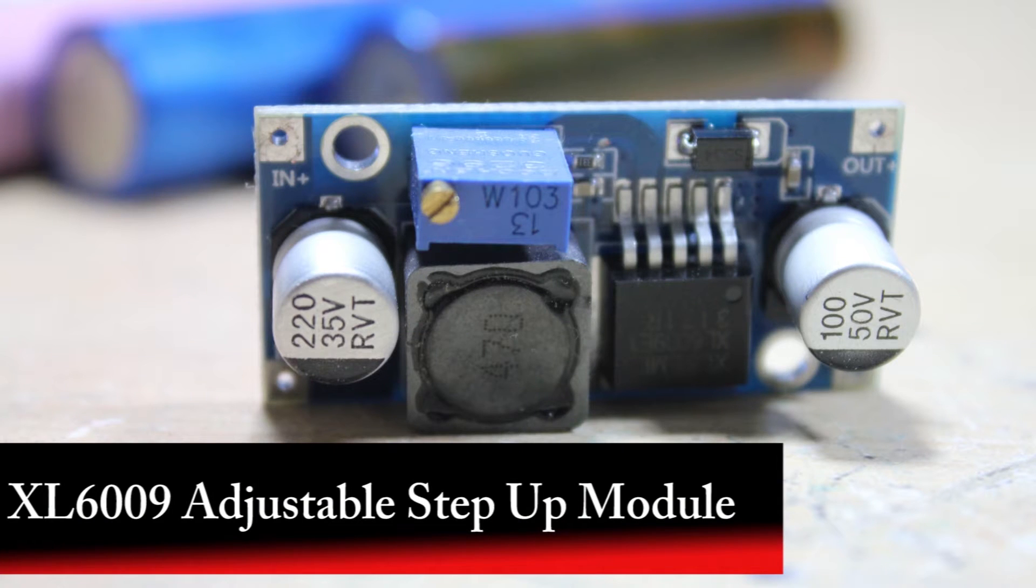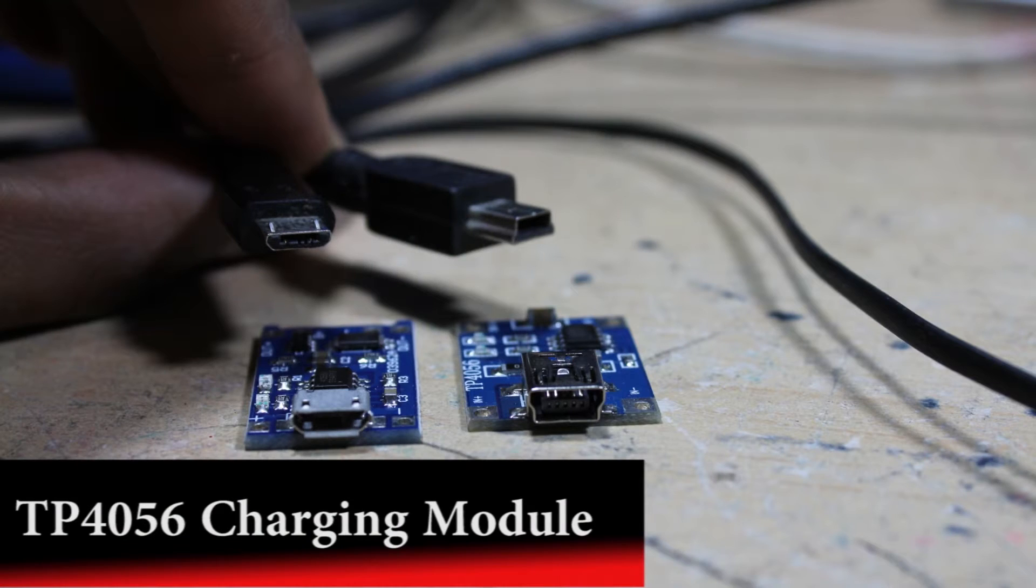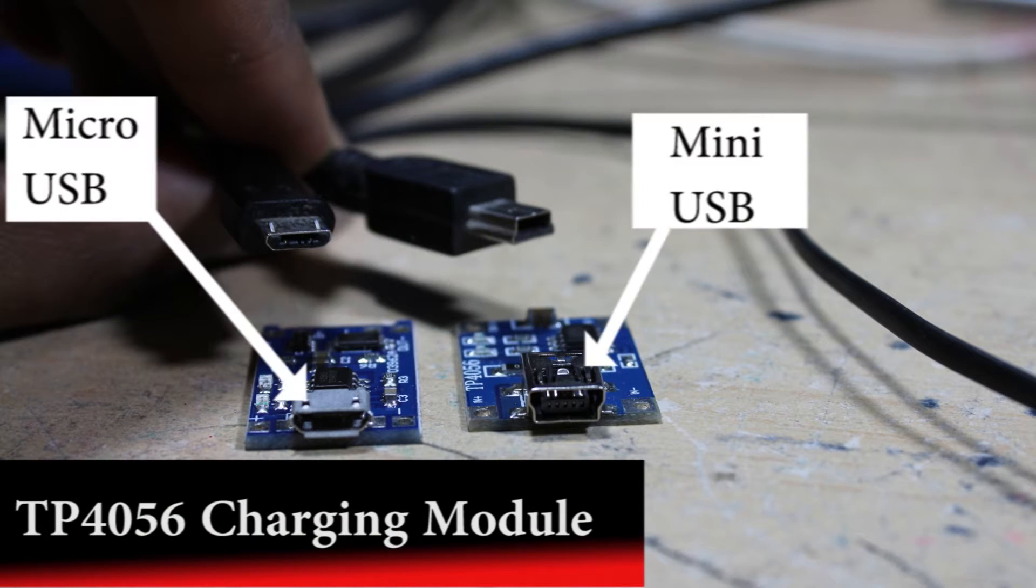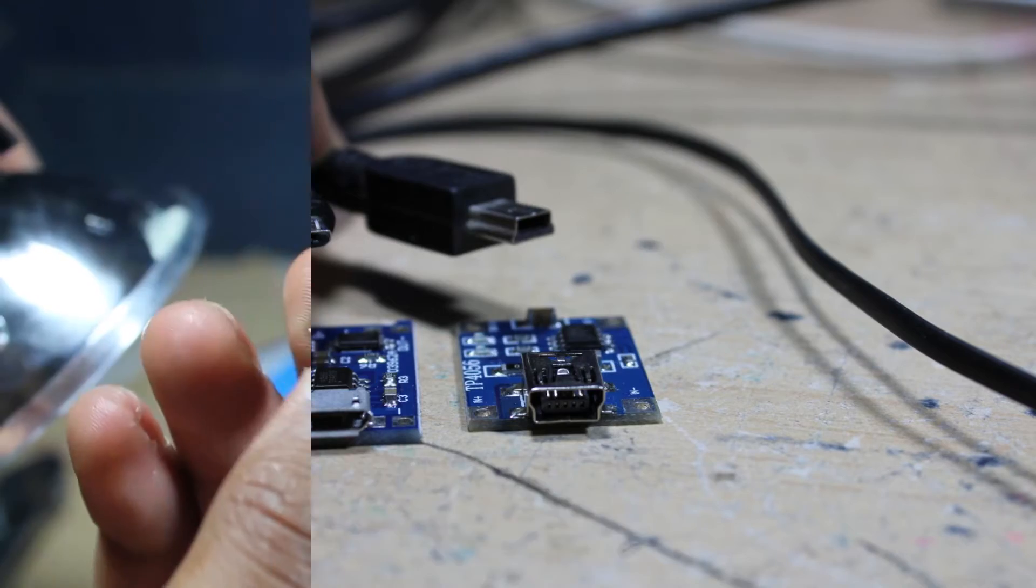One XL6009 DC-DC step-up module, an 18650 5V charging module. There are two types, one can be plugged in through micro-USB and the other uses mini-USB.